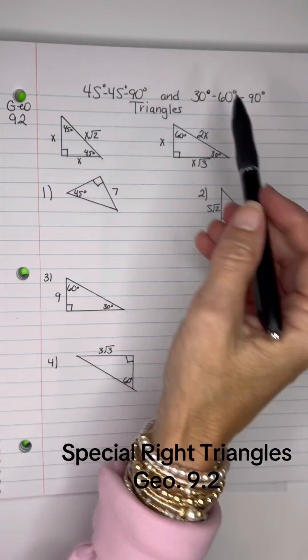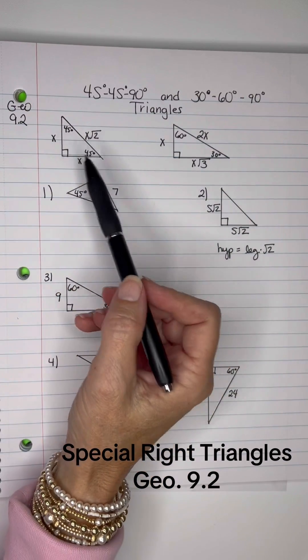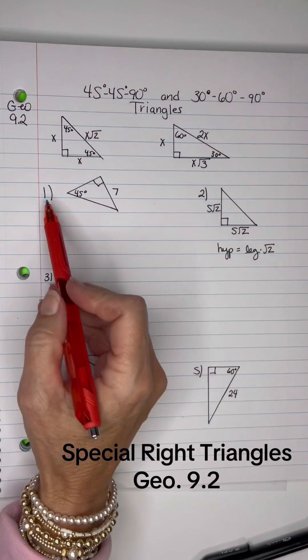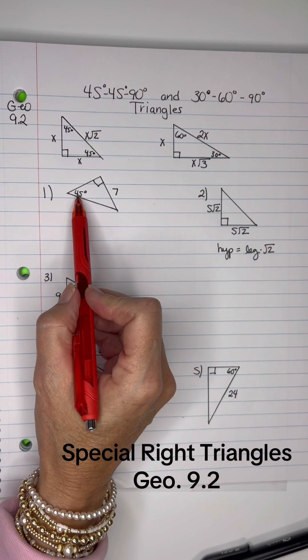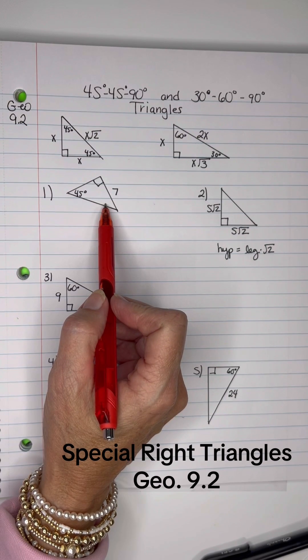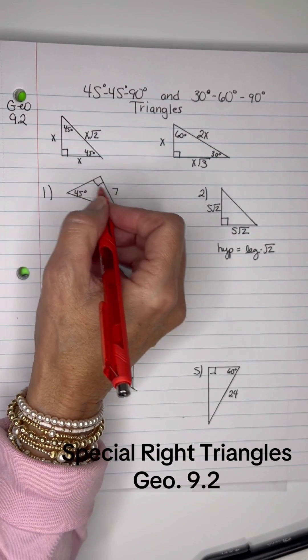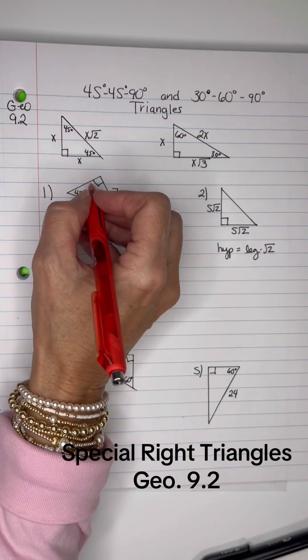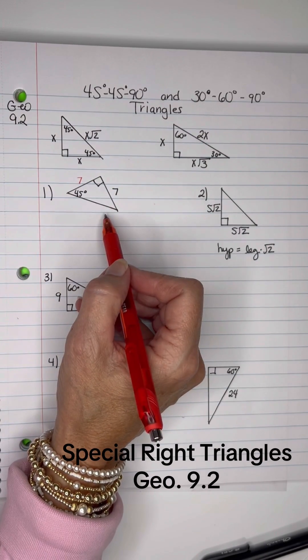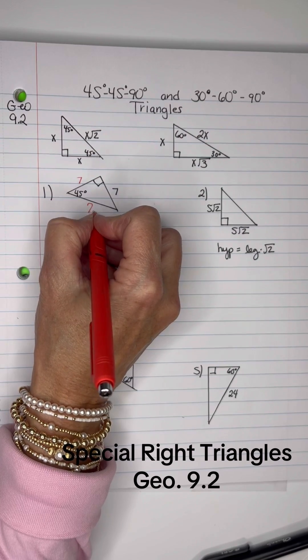Let's do one more video where I combine both the 45-45-90 and the 30-60-90 triangles. Here are the two examples that we can go by. So for the first one, I see a 45 degrees here. They don't always write at both places, but we know that this would have to be 45. If you're looking for the other missing leg, remember that the legs are the same size on the 45-45-90, so that would be 7. And then the hypotenuse will be the leg times the square root of 2, so that will be 7 square root of 2.